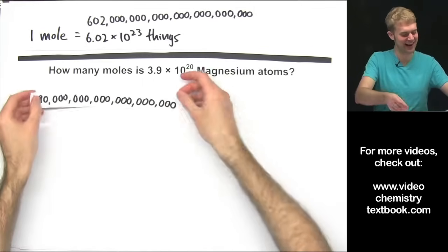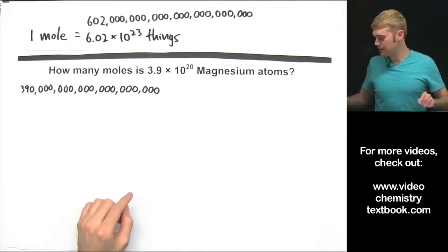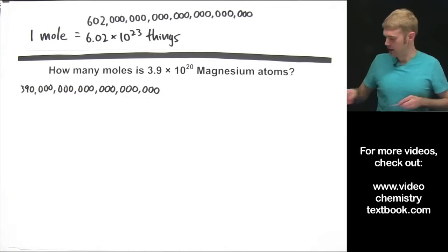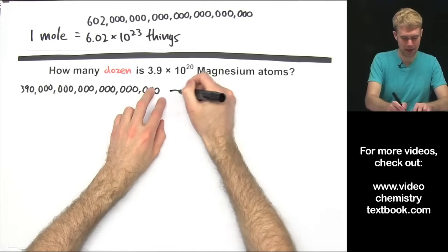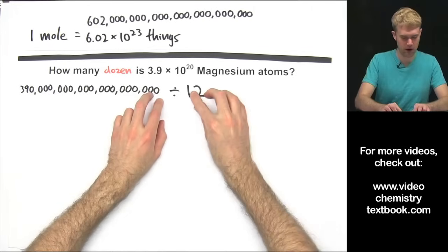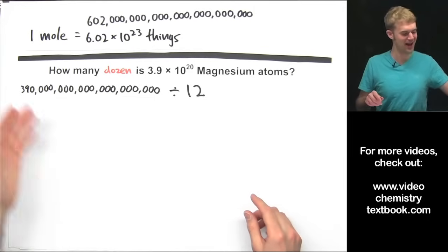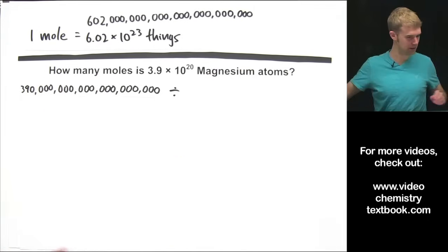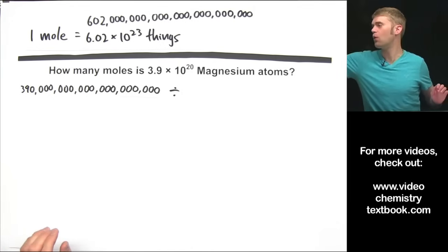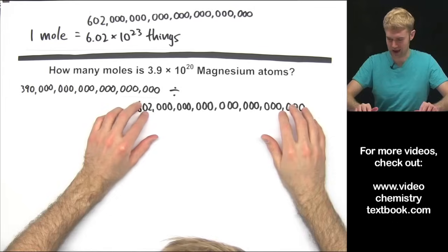This number here is not a scary Martian number, it's actually a real number. Let's think about what we'd do if we were talking about dozens instead of moles. We would take this and we would divide this by 12 because there are 12 things in a dozen. We want to know how many times does 12 go into this number. Intuitive to divide this by 12, instead we're talking about moles, so we're going to want to divide this by 602 hexillion.